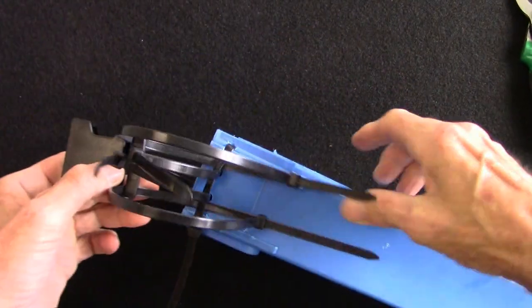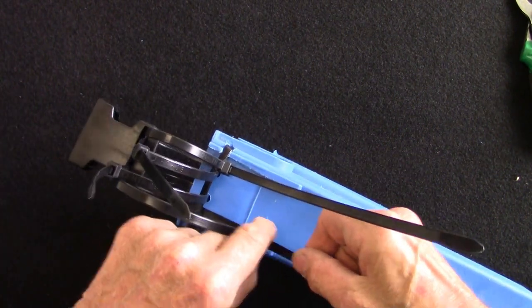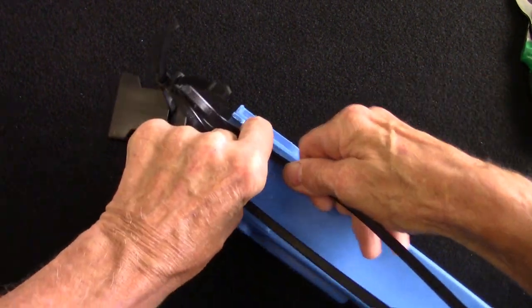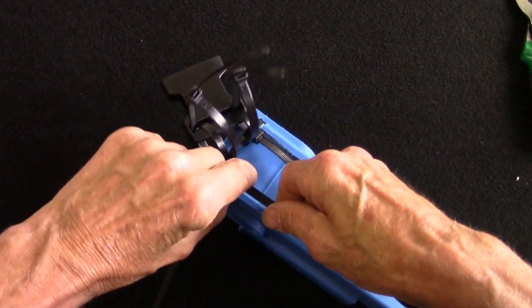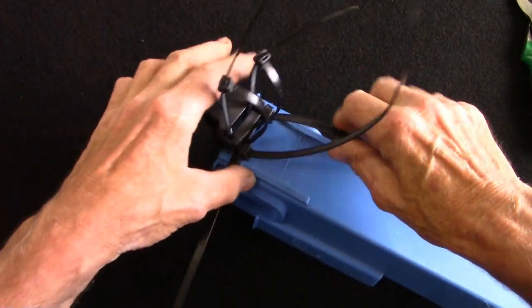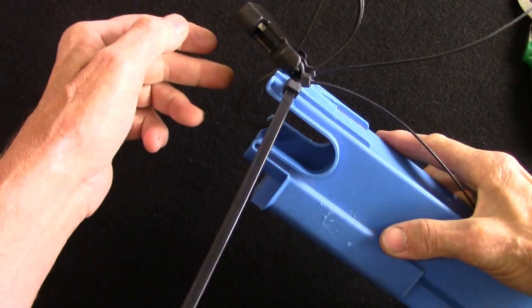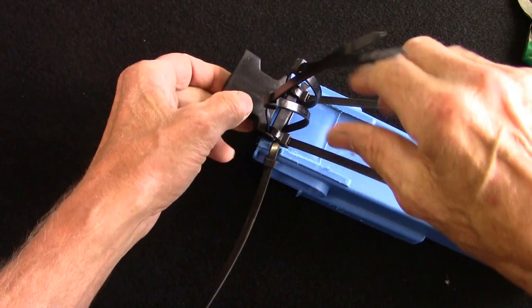Now we'll start with each end on the very end here, those two first like that, and tighten them as tight as possible. Now you can see why we've got long zip ties, that way we can tighten it much tighter.